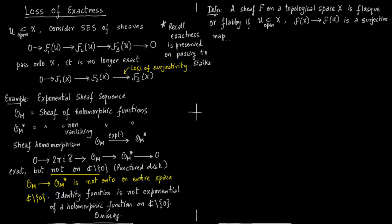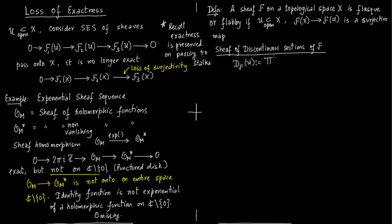Now we should talk about the sheaf of discontinuous sections of F. If you are given a sheaf F, you can construct a new sheaf out of it — the sheaf of discontinuous sections of F. This looks almost like sheafification but we do not worry about gluing here. We denote this sheaf by D_F(U), dropping the subscript F when clear from context. You define it by taking the direct product of all the stalks for all points lying in the set U. This is naturally a flabby sheaf.